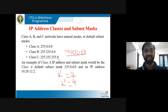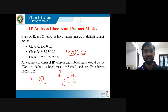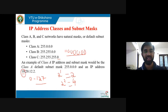An example of a Class A IP address: the default subnet mask is 255.0.0.0 and an IP address might be 10.20.12.2. You check the first octet — if it falls in the range 0 to 127, the address belongs to Class A. If it is in the range 128 to 191, it is Class B. Just by considering the first octet, you can decide which class the IP address belongs to.